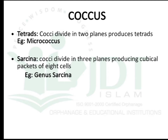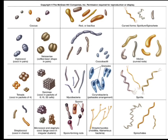Cocci dividing in three-dimensional planes produce a cuboidal packet of eight cells, known as Sarcina — example: genus Sarcina. So to summarize the coccus subtypes visible in the diagram: diplococci (example: Neisseria), tetrads, Sarcina, streptococcus (chain), and staphylococcus (cluster).